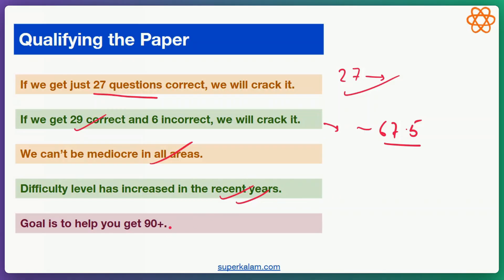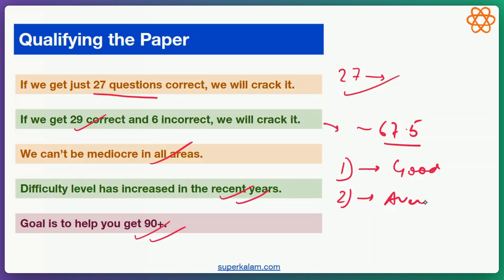Our goal in this video series is to help you get at least 90 plus so that you can crack the CSAT examination confidently. The strategy should be: in one area you are good, in the second area you are average, and in the third area you are below average to average.